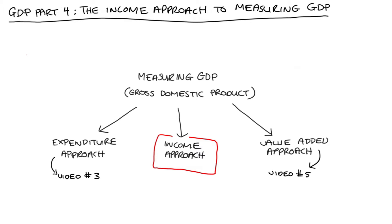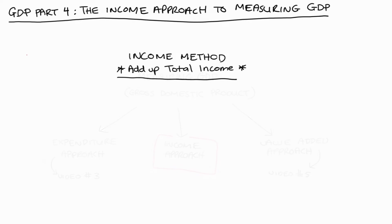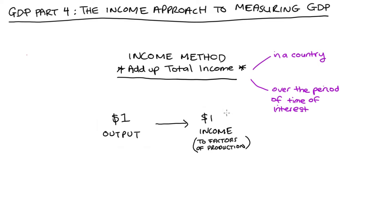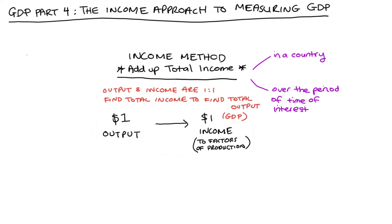In terms of the income method of measuring GDP, the method really just involves adding up the total income in a country over the period of time that we're interested in. The theoretical idea behind the approach is that for every one dollar value of output that an economy produces, this will be associated with one dollar worth of income which pays for the factors of production used to make that output. So we can find the total value of our output — GDP — by adding up the total income.